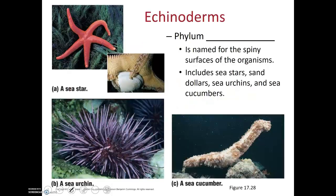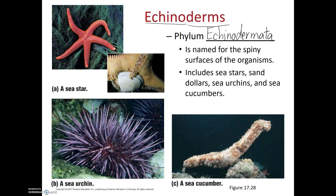Of the deuterostomes, the first one we'll discuss are the echinoderms, phylum Echinodermata. The prefix echino means spiny, and in this case derm refers to skin.